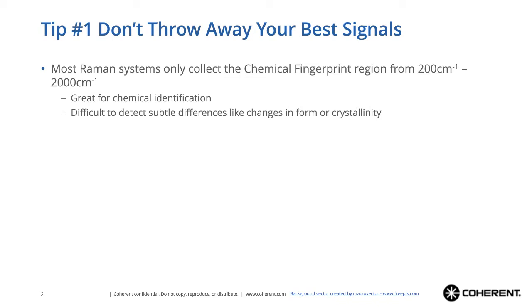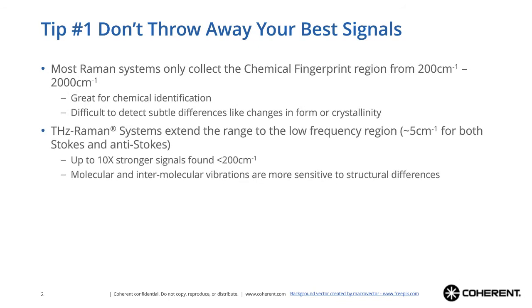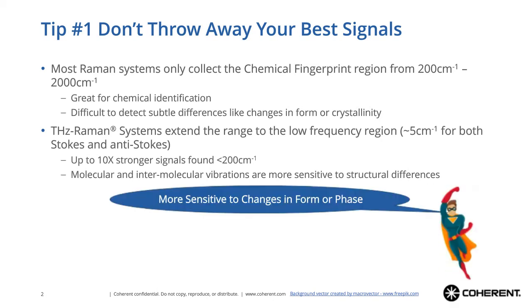With terahertz Raman systems, we actually extend the range of Raman to the low-frequency region down to about five wavenumbers for both Stokes and anti-Stokes. This gives you up to 10x stronger signals that can be found in the low-frequency region and allows access to molecular and intermolecular vibrations that are more sensitive to structural differences in the material. The low-frequency portion of the Raman spectrum typically thrown away in a conventional Raman system is actually more sensitive to changes in form or phase.